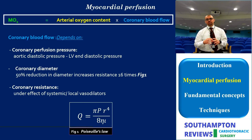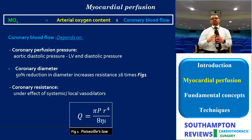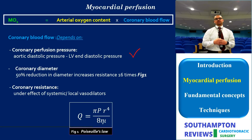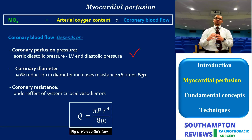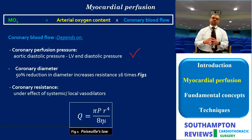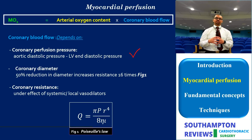Coronary blood flow is governed by three main factors. One is the coronary perfusion pressure, which is calculated as diastolic pressure minus LV end-diastolic pressure. Hence, all factors which increase intraventricular pressure or increase end-diastolic pressure — like distention or predation — will obviously compromise coronary perfusion pressure.